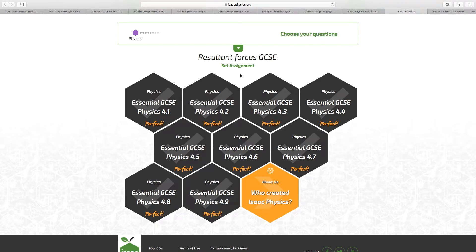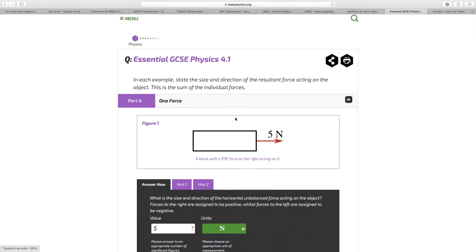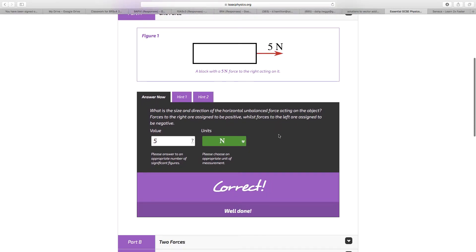So the solutions to the Isaac Physics questions I set you. If we start with 4.1, you only have 5 Newtons to the right. Hopefully you've appreciated that with the horizontal forces, right is positive, with the vertical forces up is positive. So the answer is 5 Newtons.